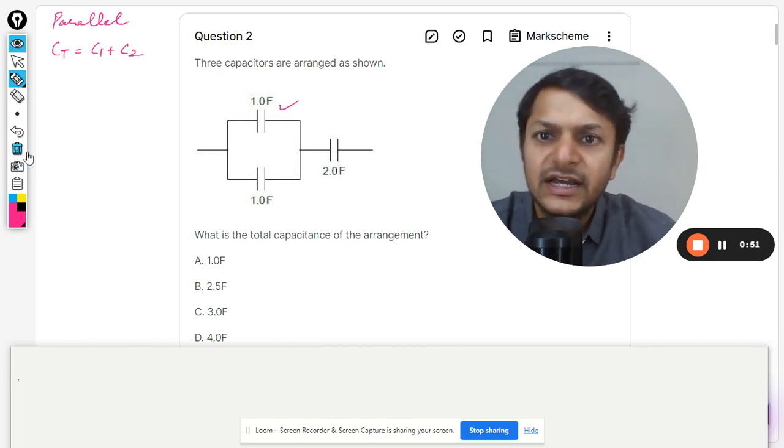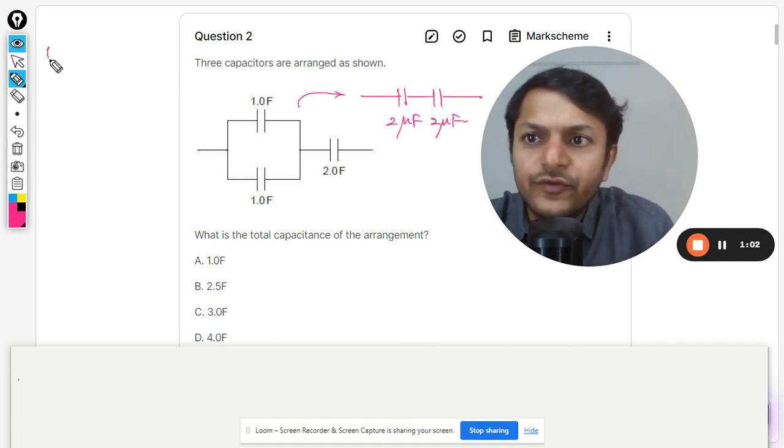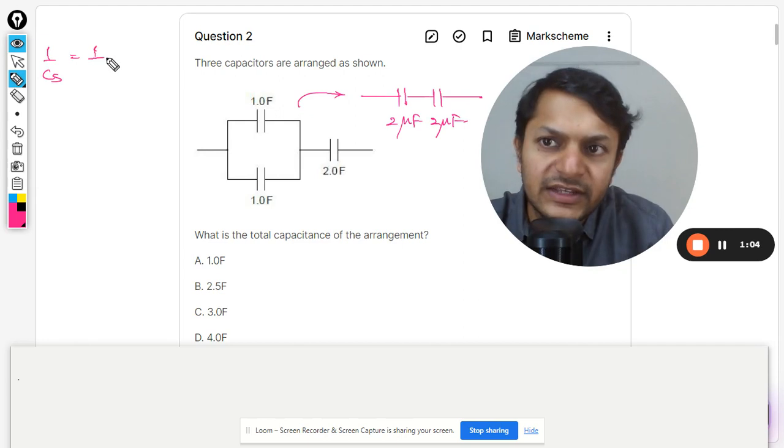This circuit can be redrawn as this. So this becomes two microfarad, this becomes two microfarad. Now they are in series, so we would be using the formula for the series which is given by this.